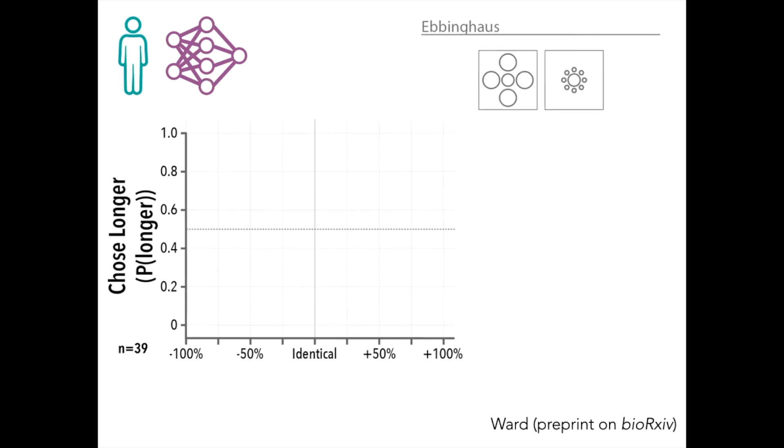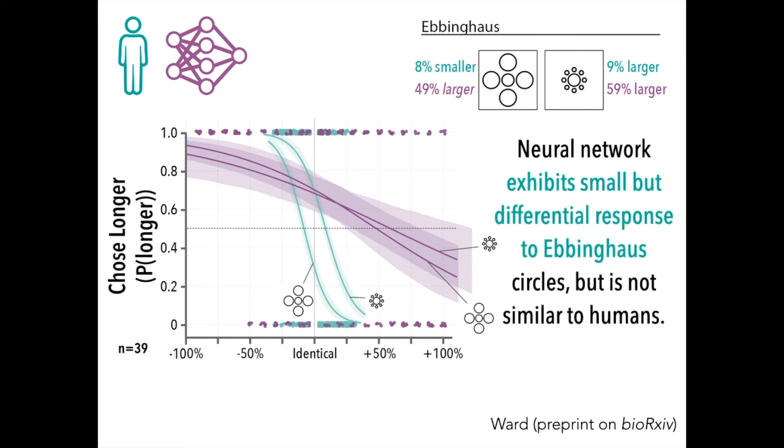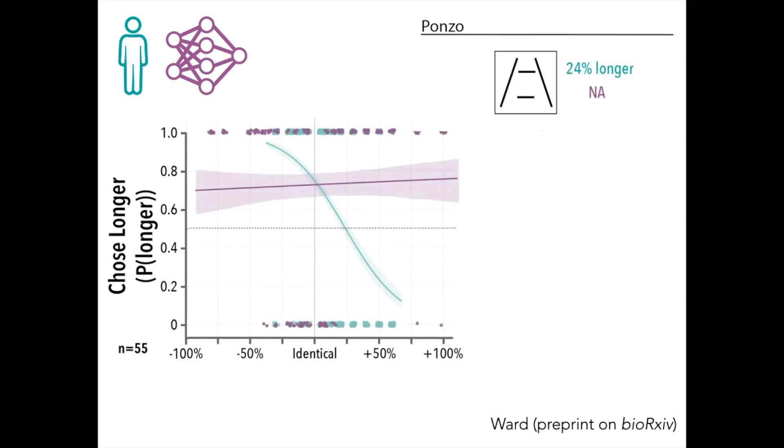What about the other illusions? Here, plotting Ebbinghaus, humans show it, and here there is a little bit of a difference, but it's much less of a fit for this. However, we're still looking for this differential response to the two illusion inversions rather than an exact magnitude of illusion. So these neural networks also exhibit small but differential response to Ebbinghaus, but it doesn't seem like it's the same type of illusion compared to humans. For the Ponzo illusion, humans demonstrate it, but networks do not.